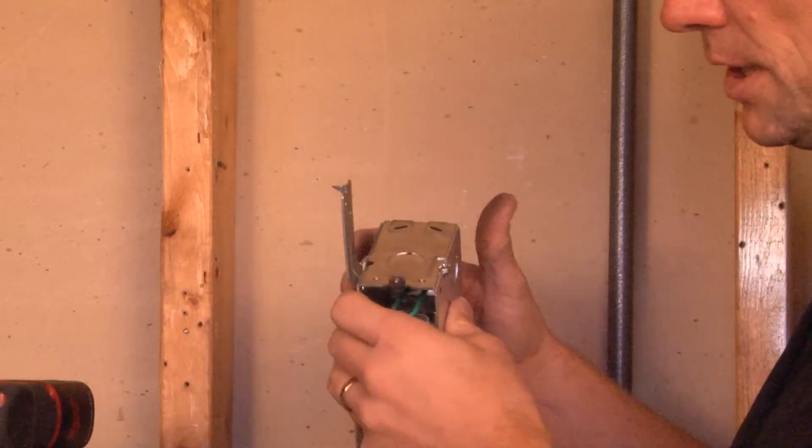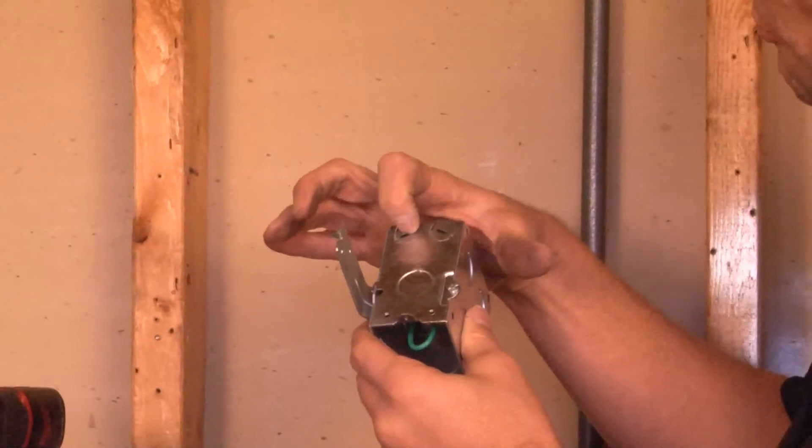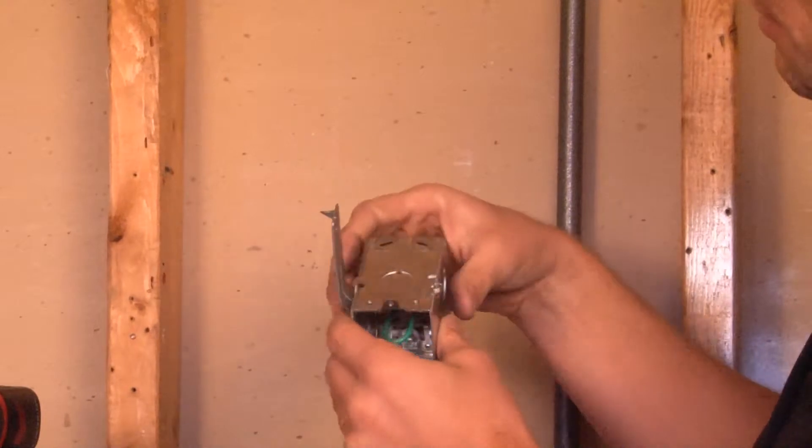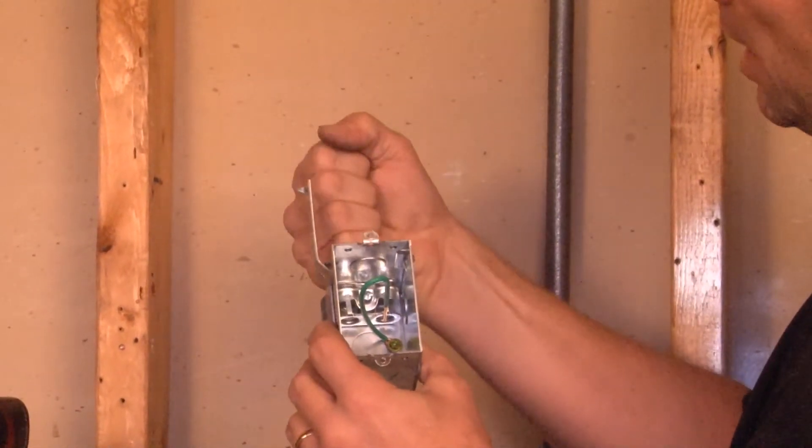To install the flexible metal conduit clips, you simply remove one of the tabs using a screwdriver by prying it out, then install the flexible metal conduit.